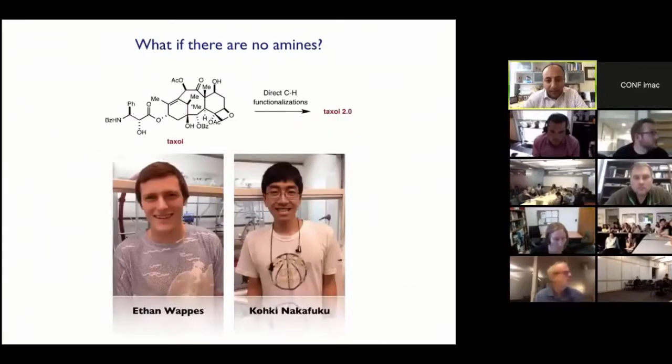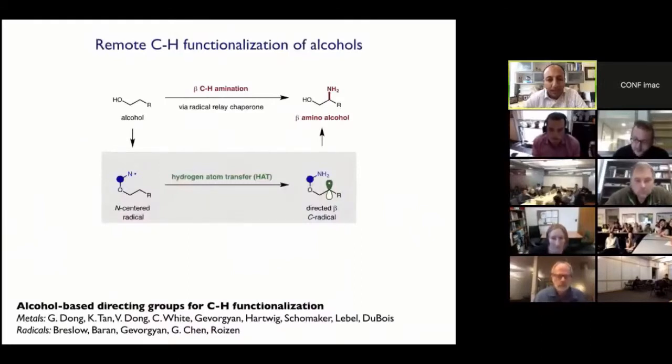And so with this nitrogen-centered chemistry behind us, we wanted to tackle the real challenge we were looking to set out to, and specifically the alcohol-based challenge. And this is work pioneered by Ethan Wapis and Koki Nakafuku. And here the chaperone strategy was simply, can we append a nitrogen-centered radical onto a ubiquitous alcohol motif, and then direct selective C-H functionalization. And so the chemistry of directing groups appended to alcohols is certainly rich. Those in this center and around the world, in the metal-mediated C-H functionalization community, have certainly developed this area. And as you can imagine, the radicals community has also been thinking about it, even back from the early days of Breslau, with more recent contributions also highlighted here.